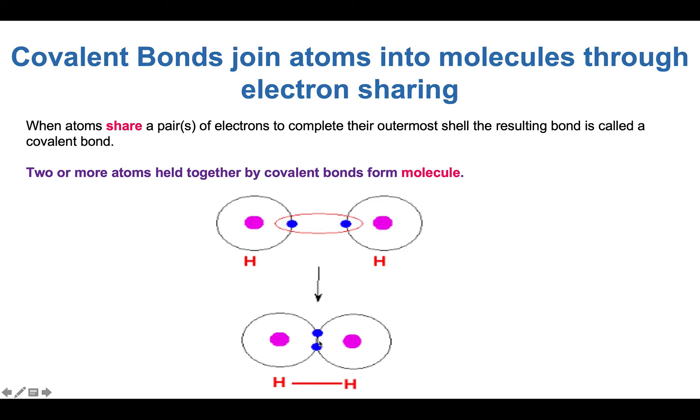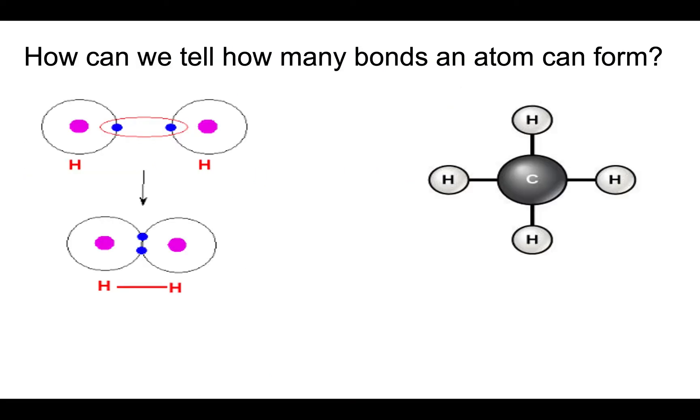Such that they're both now have a complete outer shell. What do we mean by sharing electrons exactly? It doesn't mean that these electrons are sitting in here all the time in the middle between the atoms. It means that on average these two electrons spend half of their time around one atom and half of their time around the other atom. So on average both of these atoms get to have a complete outer shell.